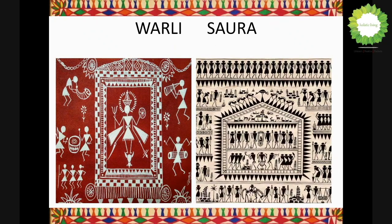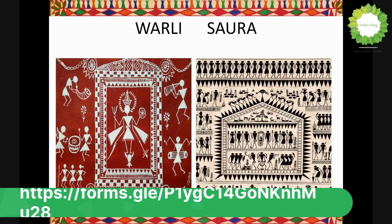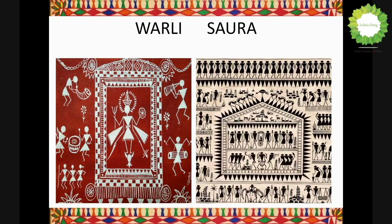Most of the houses are built with bamboo — it's a bamboo hut. The wall is covered with mud using red clay or 'geru' mixed with water to give a coating, so the red base is ready. Next, they use rice paste — mixing rice flour with water to make a paste. They use a bamboo stick for marking outlines, chew the bamboo stick to make it soft and supple like a brush, then use it for filling.